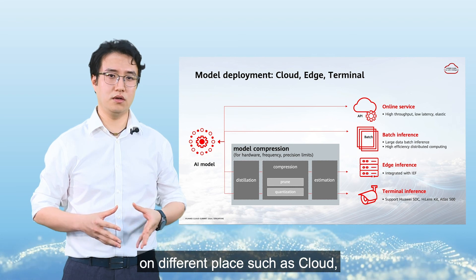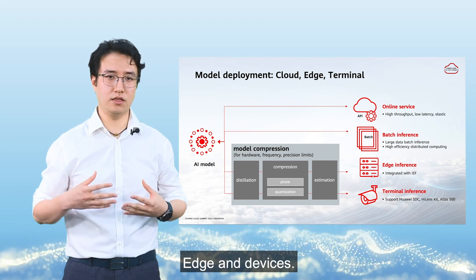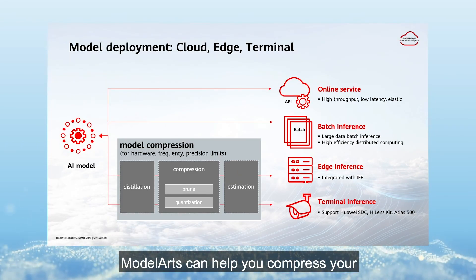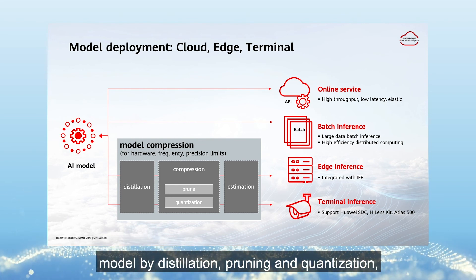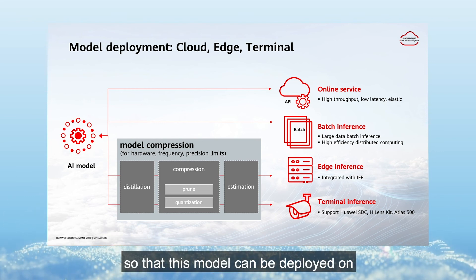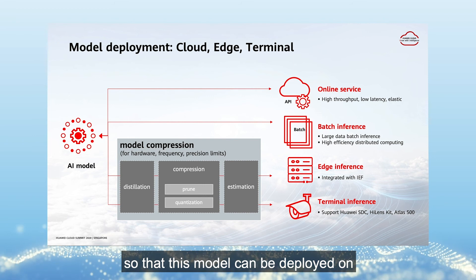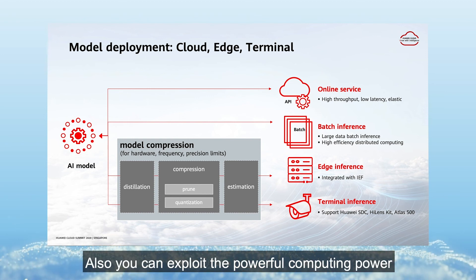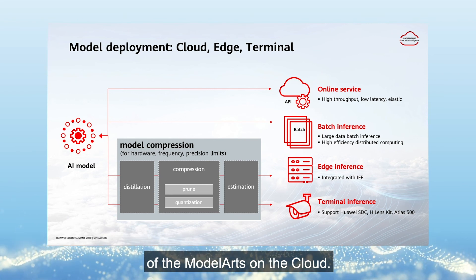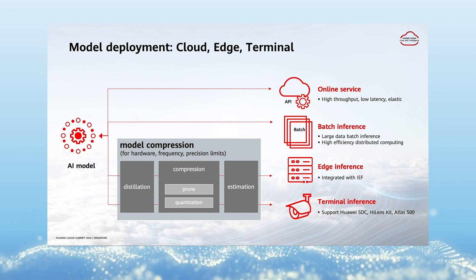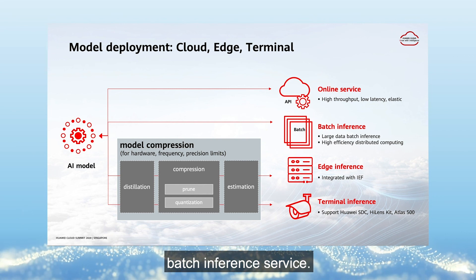Model Arts also supports deploying your model to different targets such as cloud, edge, and devices. For devices with lower computing power, Model Arts can help you compress your model through distillation, pruning, and quantization, so the model can be deployed on lower-powered devices. You can also exploit the powerful computing on the cloud to deploy your model and establish an online service or batch inference service.